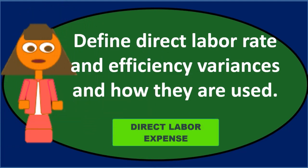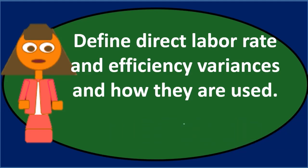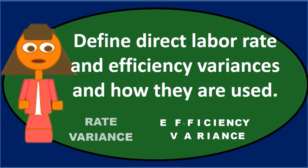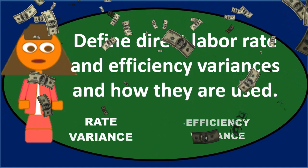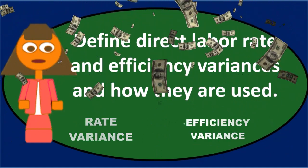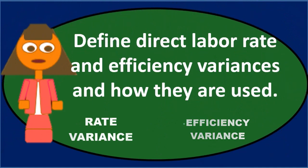We would then further want to break that number down, because there are at least two components to it. In other words, it could be a rate variance or it could be an efficiency variance. That difference could be a result of us having different rates — different wages, different hourly rates — than we had budgeted for, actual versus budget. Or it could be a result of us having a different number of hours worked than we budgeted for. So we need to take that one line item for direct labor and break it out into those two components: the rate variance and the efficiency variance.